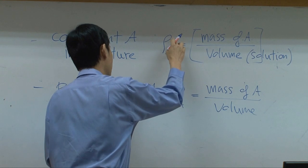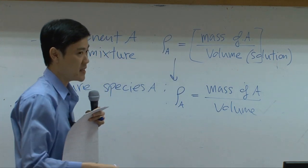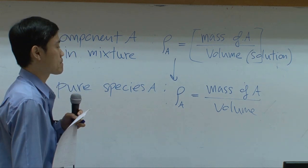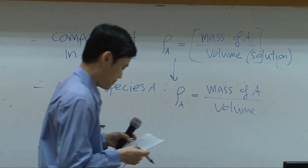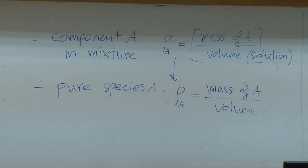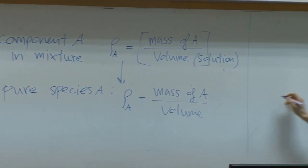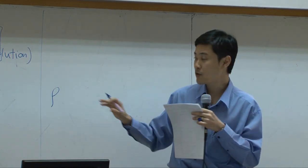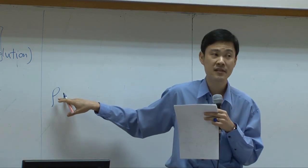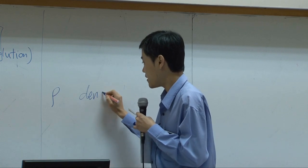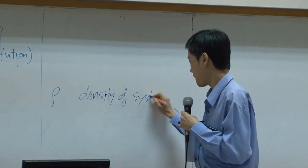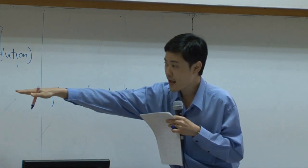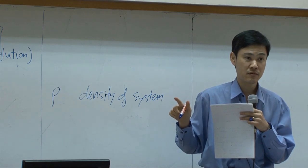So this value in the mixture becomes this value in the pure species. You can say that this would be the upper limit of ρ_A. Now, if I write down ρ without subscript A — for a pure species, I call this the density of the system. If my system is a pure component, then ρ_A and ρ are supposed to be the same number.